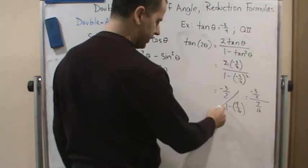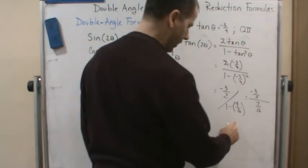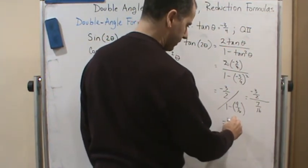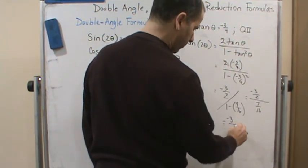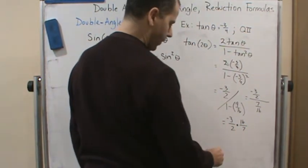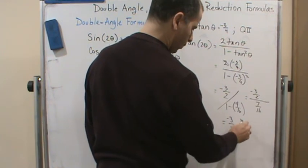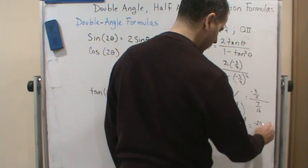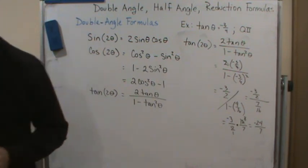I just do 16 over 16 minus nine-sixteenths, which is going to give you seven-sixteenths. And then this is going to be the same as multiplying by the reciprocal of the denominator. So that's going to be negative three-halves times sixteen-sevenths. Now, the two and the sixteen are divisible by two, so it gives you one and eight. And so if you multiply it across, you get negative twenty-four sevenths.